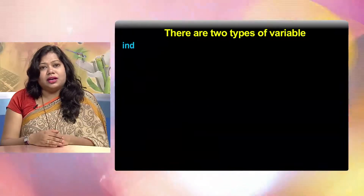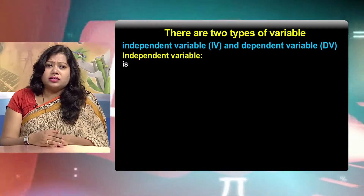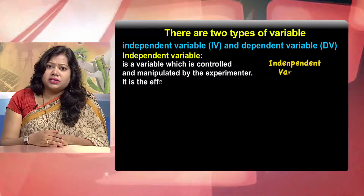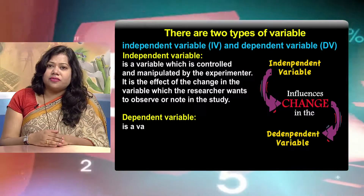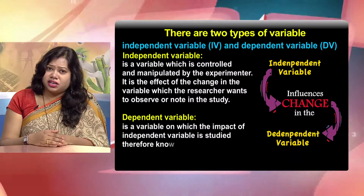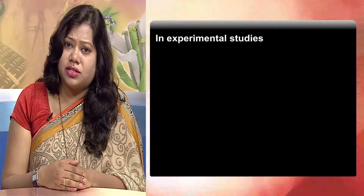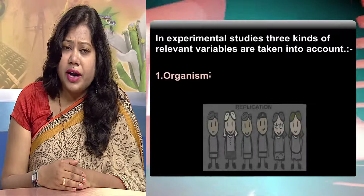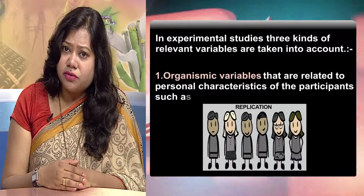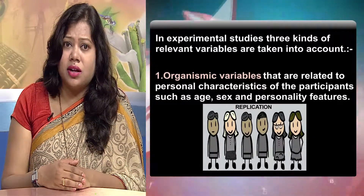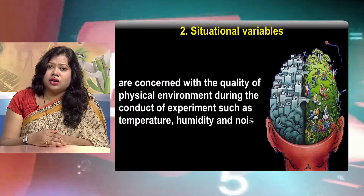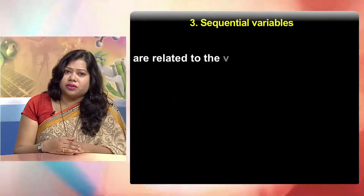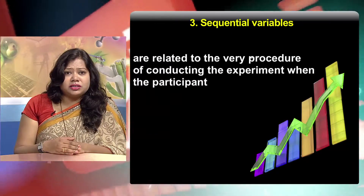There are two types of variables: independent variable and dependent variable. An independent variable is controlled and manipulated by the experimenter — it is the effect of the change in this variable which the researcher wants to observe. A dependent variable is the one on which the impact of the independent variable is studied, therefore known as the dependent variable. In experimental studies, three kinds of relevant variables are taken into account: organismic variables related to personal characteristics such as age, sex and personality; situational variables concerned with the quality of the physical environment such as temperature, humidity and noise; and sequential variables related to the procedure of conducting the experiment when participants are tested across several conditions.